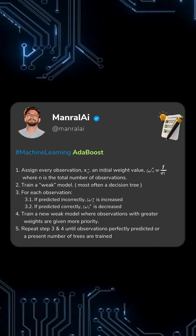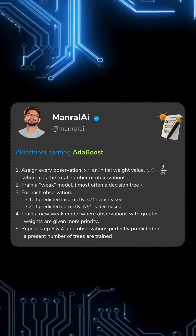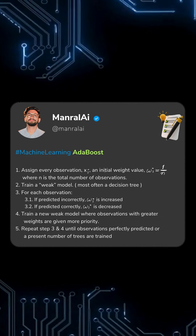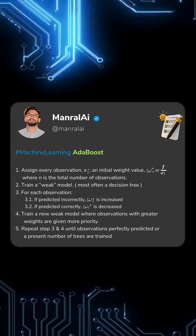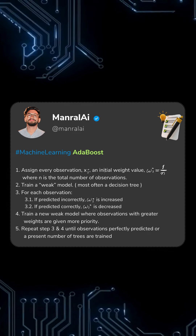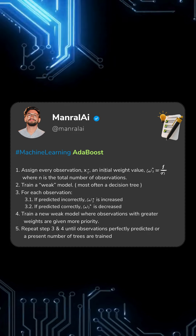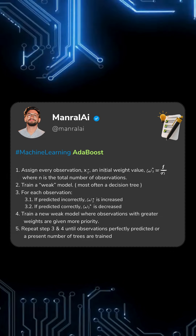Here's how it works. First, it starts by assigning equal weights to all your data points. Then it trains a weak learner on this weighted dataset. After that, it updates the weights, boosting those of misclassified instances and decreasing weights for the correctly classified ones.